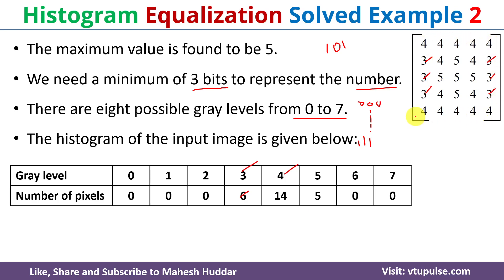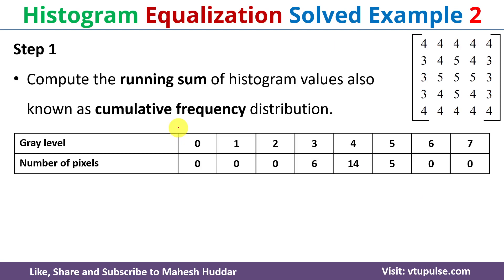For gray level 4, we have 14 pixels, meaning there are fourteen 4s in the given input image. For gray level 5, we have 5 pixels. For gray levels 6 and 7, the number of pixels is 0.